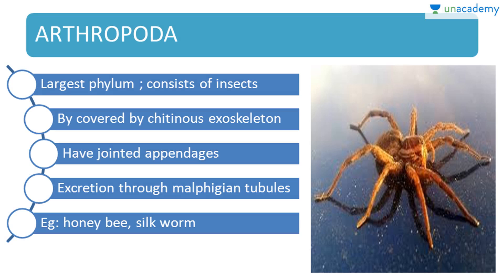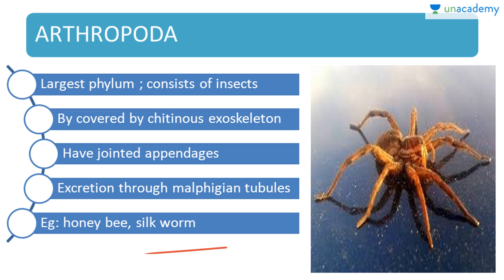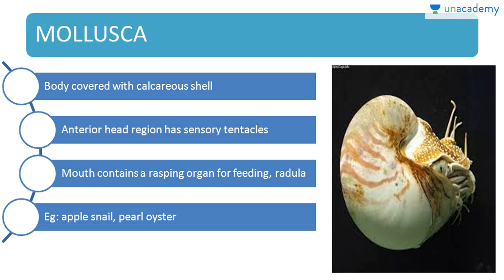Next is Arthropoda — the largest phylum, consisting mainly of insects. 'Arthro' means jointed and 'poda' means appendages, so they have jointed appendages. They are covered by a chitinous exoskeleton, and excretion occurs through Malpighian tubules. Examples: honeybee and silkworm.